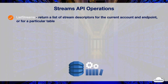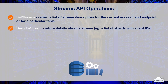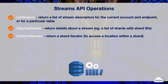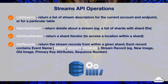DynamoDB Streams API provides the following operations. ListStreams returns a list of stream descriptors for the current account and endpoint, or for a particular table. DescribeStream returns detailed information of a stream, such as a list of associated shards with shard IDs. GetShardIterator returns a shard iterator describing a location within a shard — you can request access to the oldest, newest, or a particular point in the stream. GetRecords returns the stream records from within a given shard, including event name, primary key, new image, old image, and sequence number.